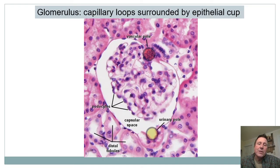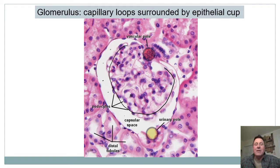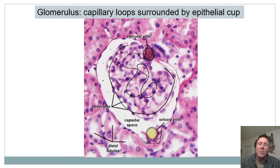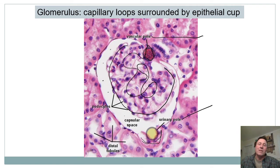Looking at some histology: you can see the glomerulus — this ball of capillaries — and the beautiful white space of the capsular space where filtrate is collected. You can even see the squamous cells lining it. The urinary pole is where fluid leaves out the proximal convoluted tube, and the vascular pole is where the blood vessels come in.